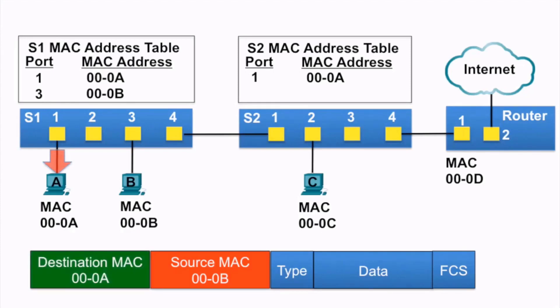PCA receives the Ethernet frame, examines the destination MAC address against its own MAC address, and notices it is a match, so it receives the rest of the frame.